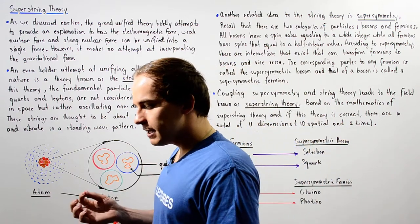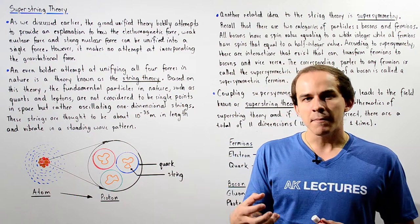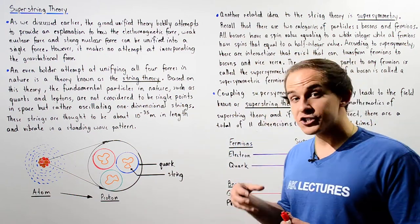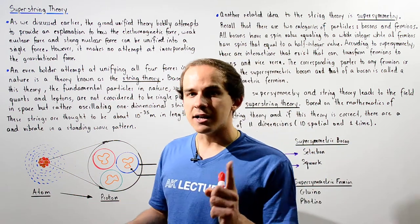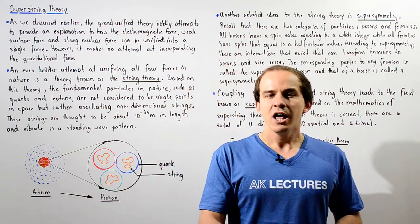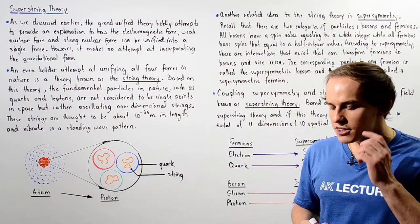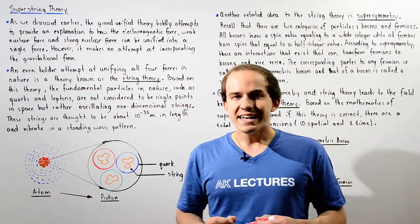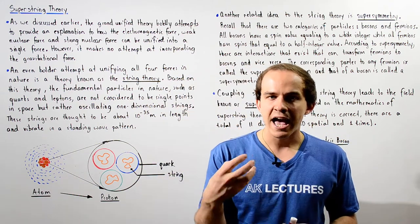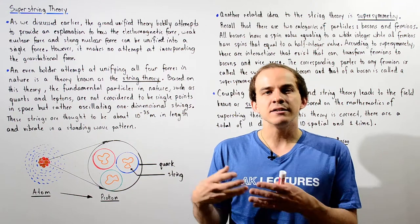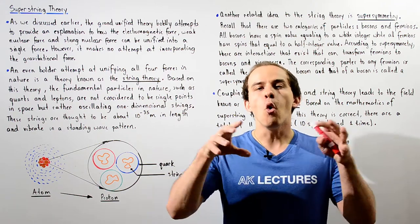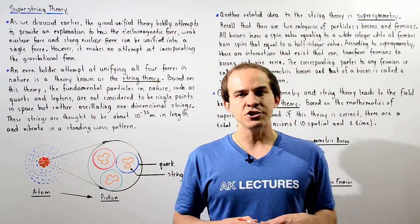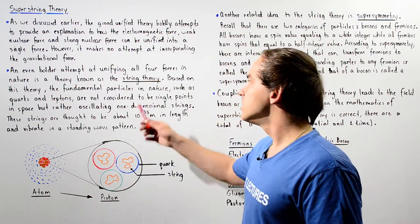Even if the Grand Unified Theory can somehow be proven experimentally, it doesn't actually explain the entire picture because it does not incorporate the fourth and final force that exists in nature, namely the gravitational force. An even bolder theory that attempts to unify all four forces that exist in nature, including the gravitational force, is known as string theory.